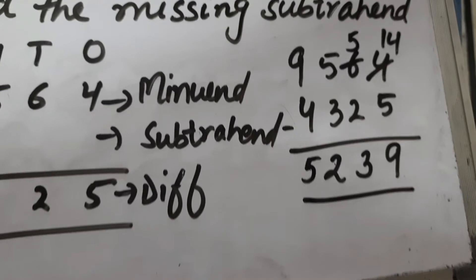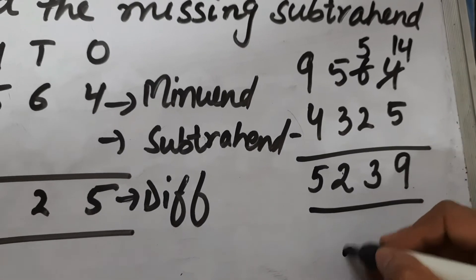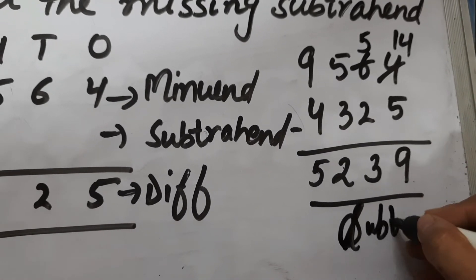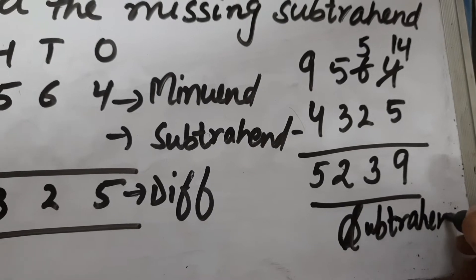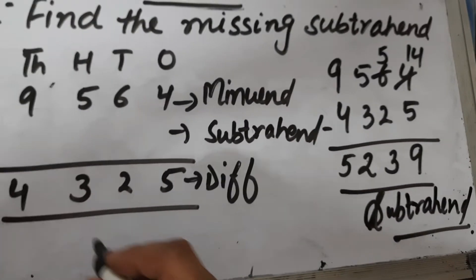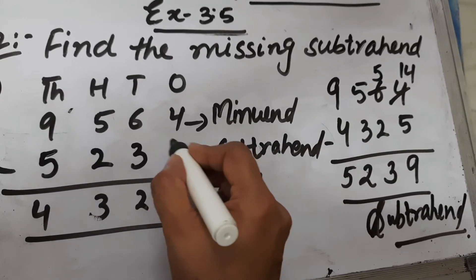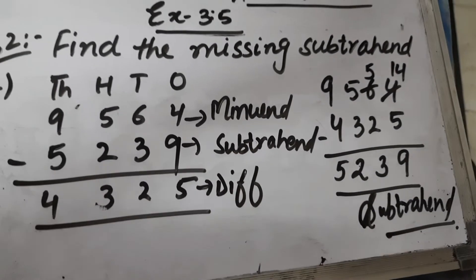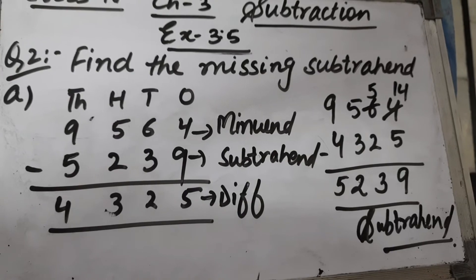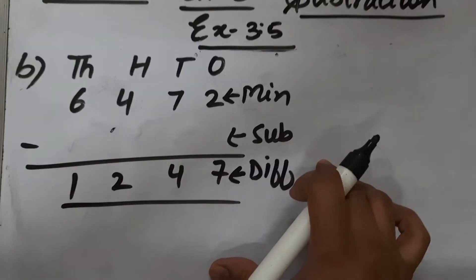So this is our subtrahend. The subtrahend is 5,239. This completes part a of question number 2. Now let's start part b. The minuend is 6,472 and the difference is 1,247. We will subtract the difference from the minuend.